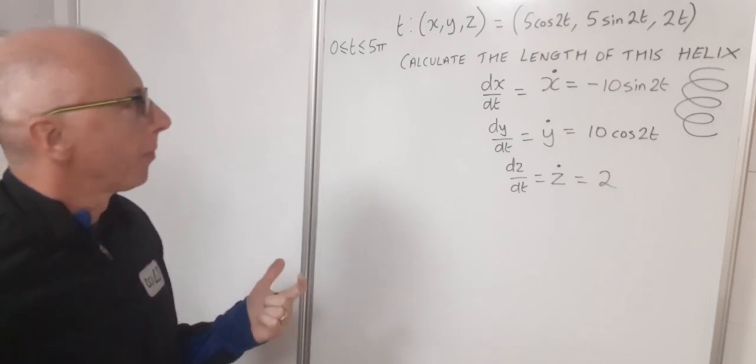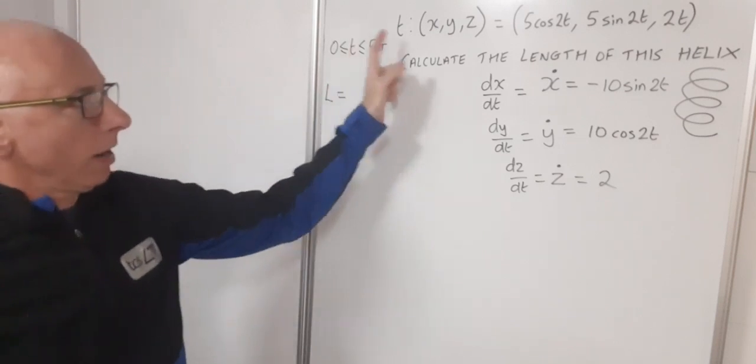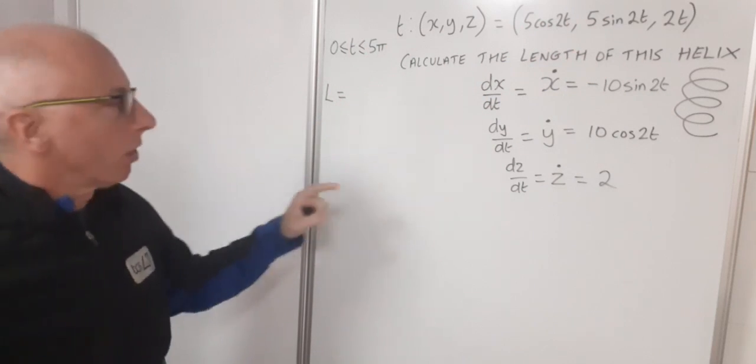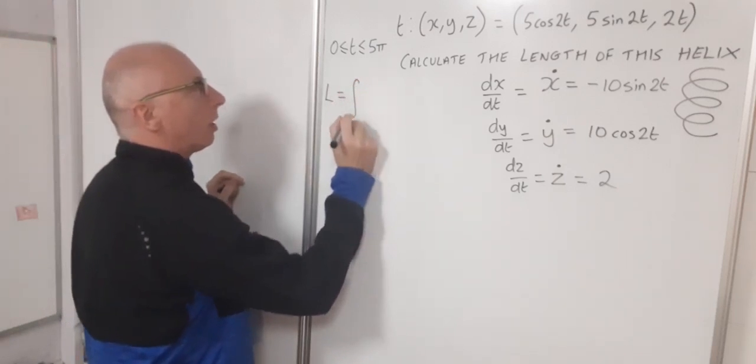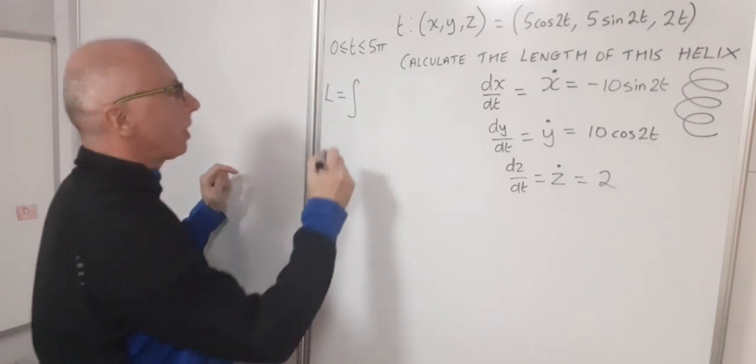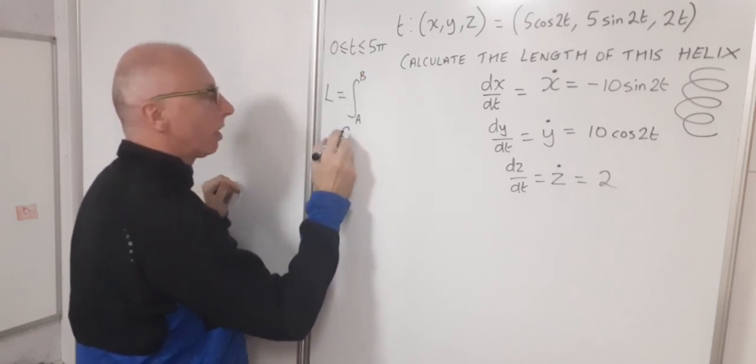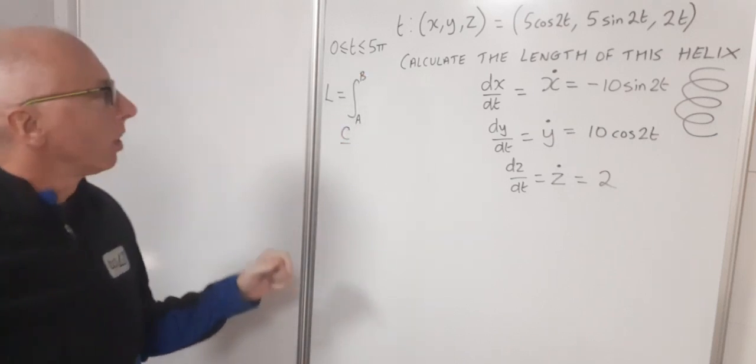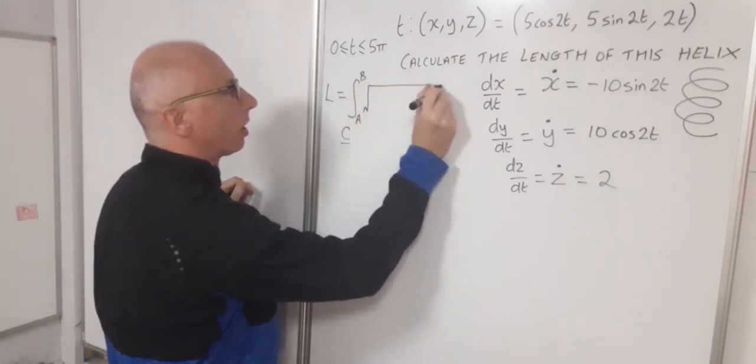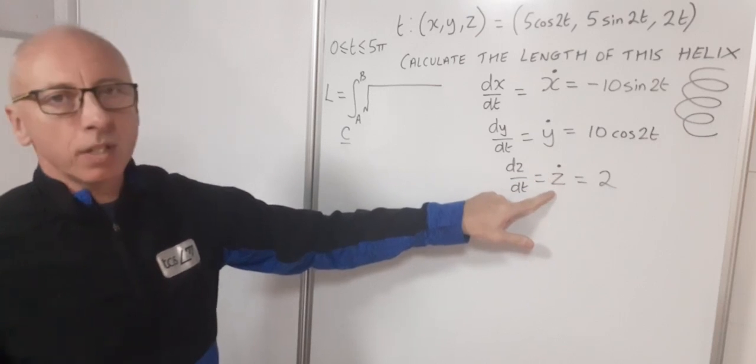So what we want now is the formula. Now the formula is an integral. So here we're in three-dimensional plane, so we need three inputs. So it's an integral from zero to five pi. I'm just going to write it as the general formula now. So A to B, that's our curve C. That's what we're looking for, curve C from A to B. And then we want the square root of, and then inside we input these derivatives and square them.